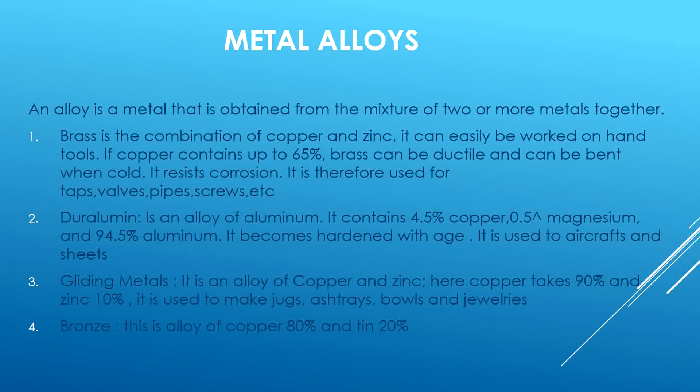Duralumin is an alloy of aluminium containing 4.5 percent copper and 0.5 percent or less magnesium. It becomes hardened with age and is used for aircraft and sheets. Gilding metal is an alloy of copper and zinc where copper takes 90 percent and zinc takes 10 percent; it is used to make jugs, ashtrays, bowls and jewellery.